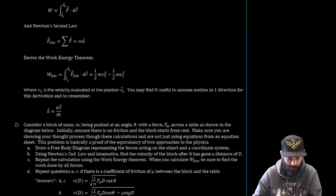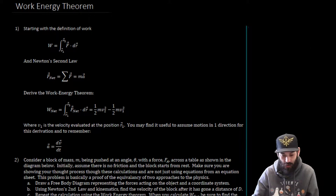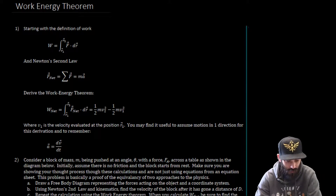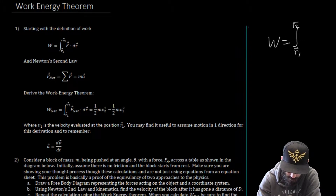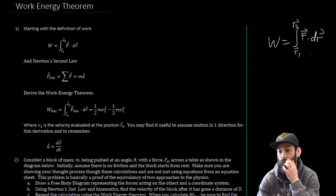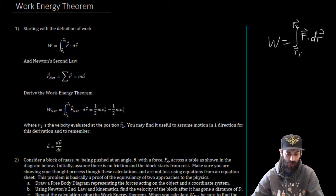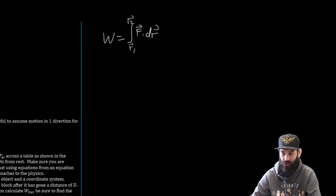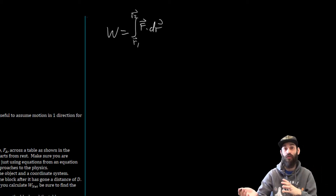In order to do that, what we're going to do is start by writing down the definition of work. So the work is going to be equal to the integral from R vector 1 to R vector 2 of F vector dot dr. Now, we can extend this because as written, the definition of work only talks about the work done by a single force. But when we're talking about the work-energy theorem, we're talking about the work done by all forces.